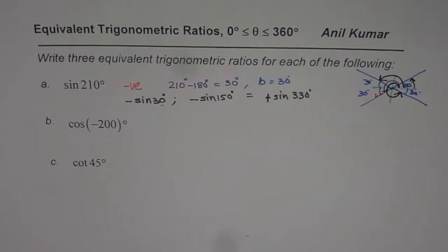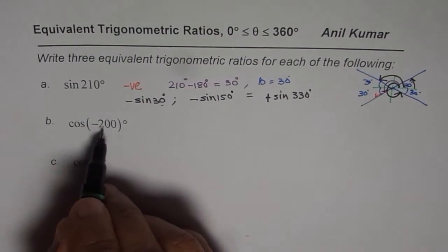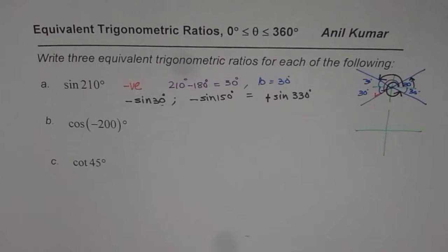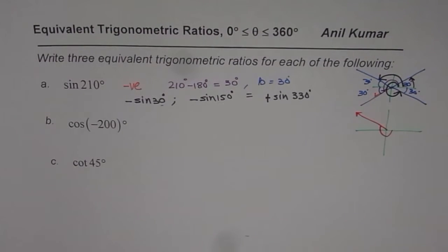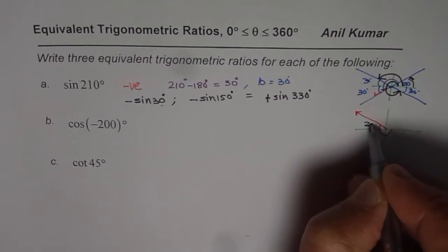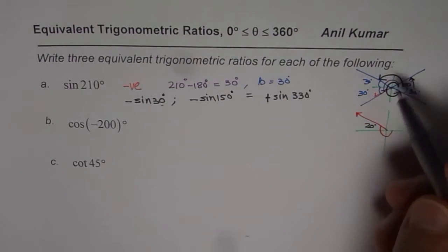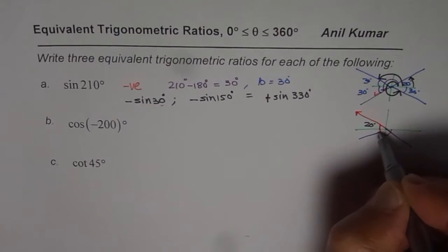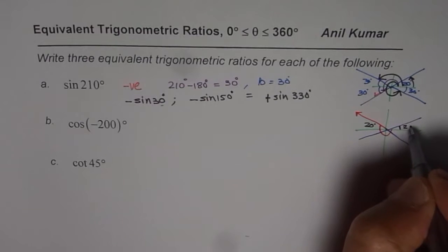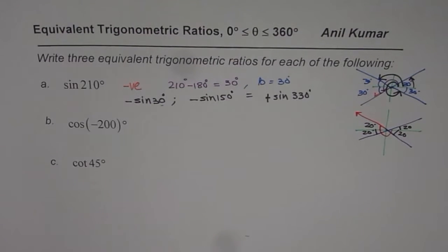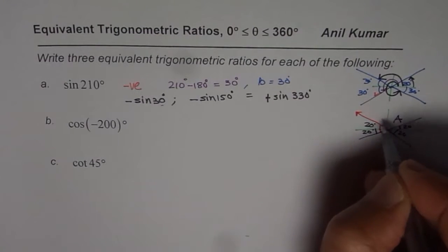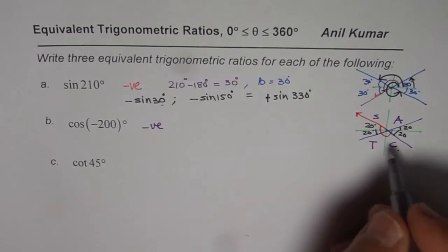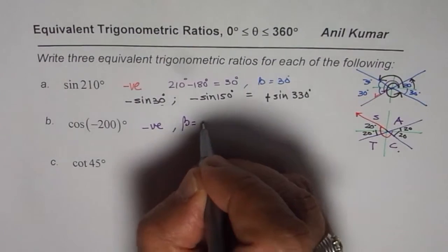Now let us follow the same principle for cosine of minus 200 degrees. Let me sketch it once again. Minus 200 means you move clockwise — 180 and then 20 more — so the acute angle for you is 20 degrees. We are looking for all acute angles of 20 degrees. The CAST rule tells us that cosine is only positive in quadrants 1 and 4, so we are expecting a negative value of cosine, and we know the acute angle is 20 degrees.